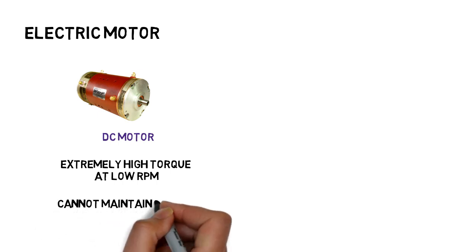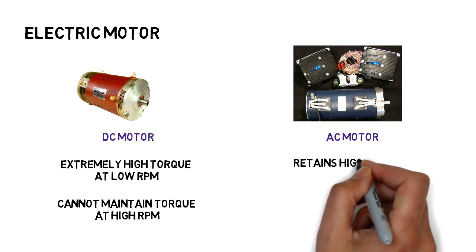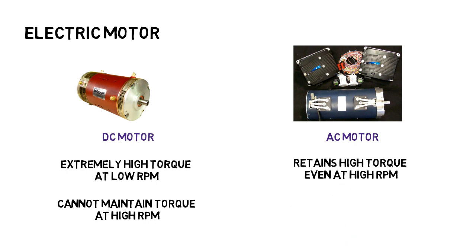The disadvantage, however, of a DC drive is that at high RPM, the torque drops. Electric cars with a DC motor struggle when climbing uphill, even at moderate speeds. Earlier models of the G-Wiz had a DC drive, which was later replaced by an AC motor. Incorporating an AC motor is more complex in terms of circuitry; however, it has huge benefits. While torque may not be as high as a DC motor of similar size, an AC motor retains its torque levels even at high RPM. All modern EVs have AC motors.